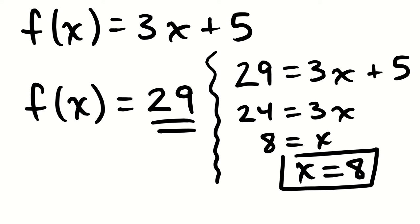We can go both ways: if I pass a function a number, it gives me a certain output, but also I can ask what number would I pass to force the function to equal 29. The answer is 8, and bringing 8 back into the function — 3 times 8 is 24, plus 5 is 29. That checks out.